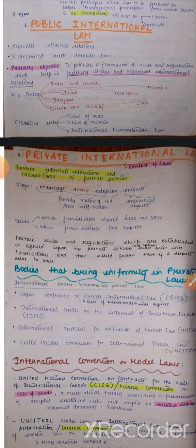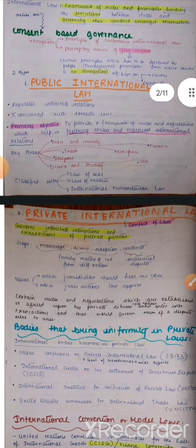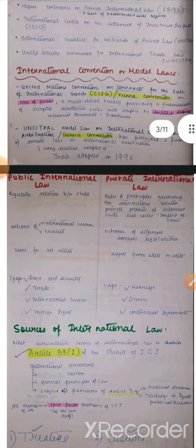India mein ek tarah ki rules hain, Canada mein doosare tarah ki rules hain — so that's a conflict, it's inconsistent. Public international law bahot hi zyada consistent hai.